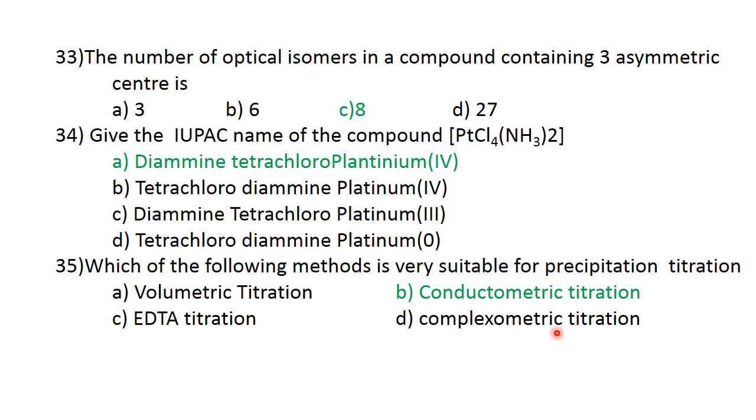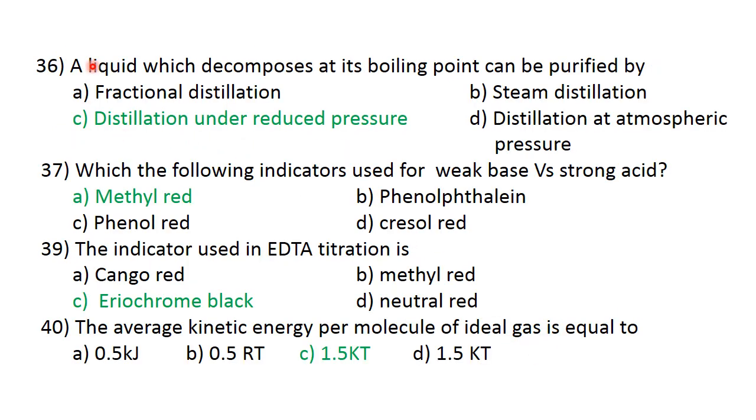A liquid which decomposes at its boiling point can be purified. The best method is distillation under reduced pressure. Which indicator is used for weak base versus strong acid titration? Methyl red is the suitable indicator. The indicator used in EDTA titration is Eriochrome Black T. C is the correct answer.